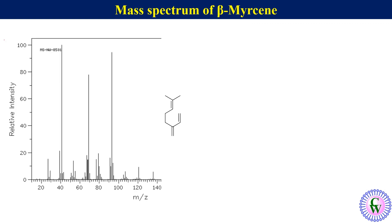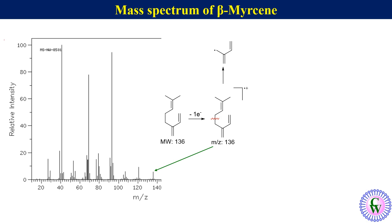Now the mass spectrum of beta-myrcene. The molecular weight of beta-myrcene is 136; after electron bombardment it eliminates one of the pi electrons to produce a molecular cation with m/z value of 136. Breaking an allylic C-C bond results in a radical and an allylic carbocation with m/z value of 69.